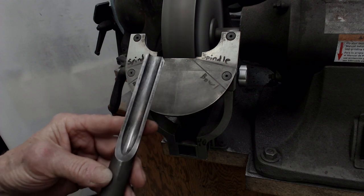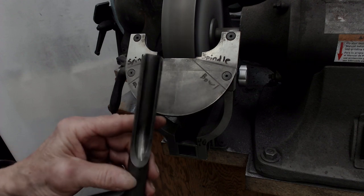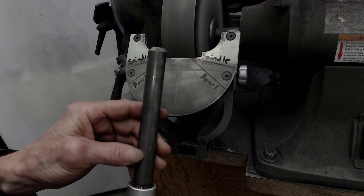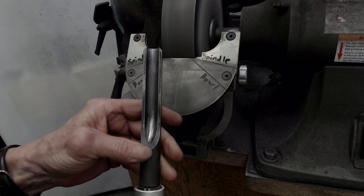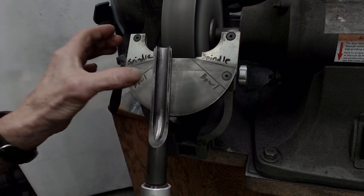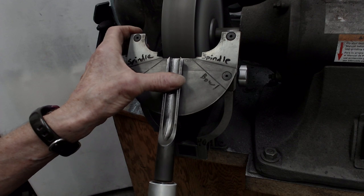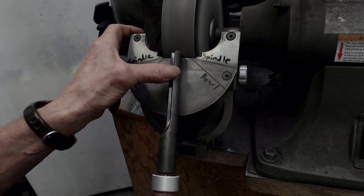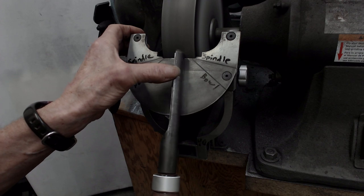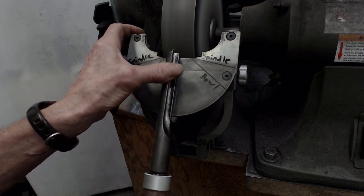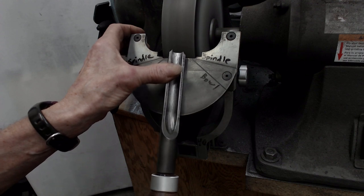I'm going to start with the spindle roughing gouge. This gouge is ground straight across and it has a 40 degree bevel angle on the entire edge. To get that, I'll hold it firmly on the platform with my thumb, contact the wheel and just roll the tool to grind my 40 degree angle on the entire edge.